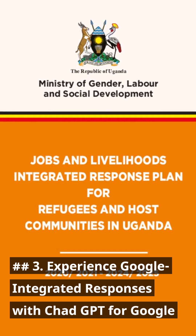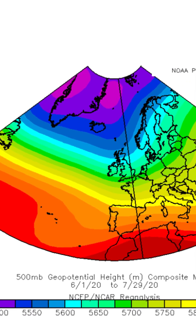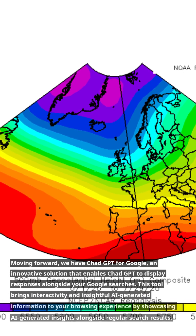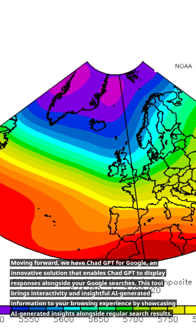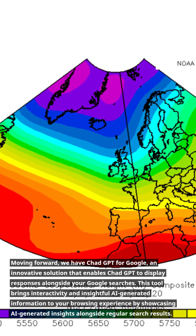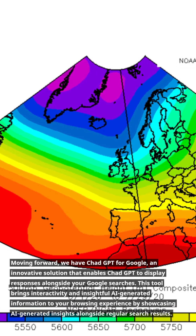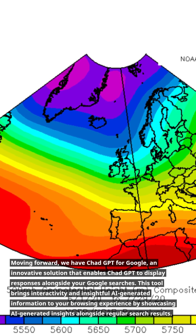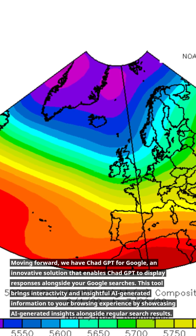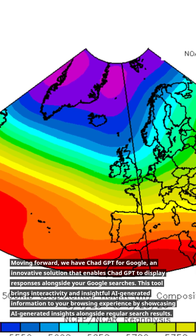3. Experience Google Integrated Responses with ChatGPT for Google. Moving forward, we have ChatGPT for Google, an innovative solution that enables ChatGPT to display responses alongside your Google searches. This tool brings interactivity and insightful AI-generated information to your browsing experience by showcasing AI-generated insights alongside regular search results.